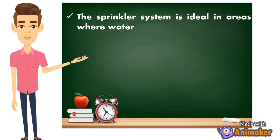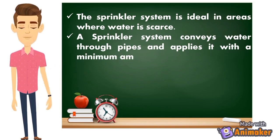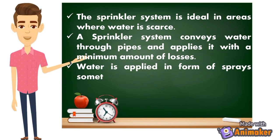The sprinkler system is ideal in areas where water is scarce — so kapag wala tayo mapagkukuha ng tubig, pwede tayong gumamit ng sprinkler irrigation system. The sprinkler system conveys water through pipes and applies it with a minimum amount of losses. The style of watering is like a spray or wisik-wisik. If you've seen one in a garden, that rotating sprinkler — that is what we call a sprinkler irrigation system, although there are many kinds depending on the style applied.